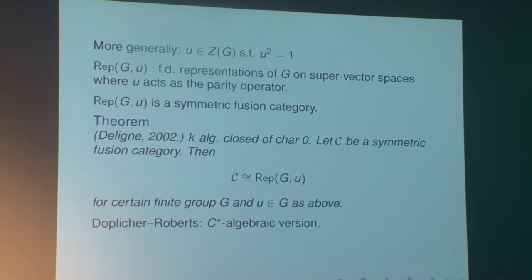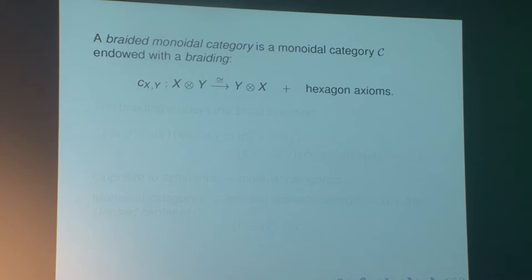These categories are defined in the case where u is the unit element of G, namely the category of finite dimensional representations of G with the braiding given by the flip. Then the category is called Tannakian, and these will be important later on.